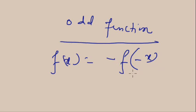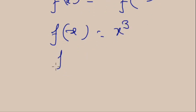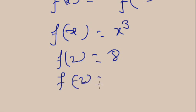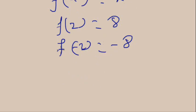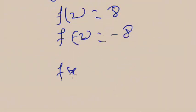An odd function is when f(x) = −f(−x). For example, f(x) = x³. Then f(2) = 2³ = 8, and f(−2) = (−2)³ = −8. So f(2) = −f(−2), which satisfies f(x) = −f(−x). This is called an odd function.